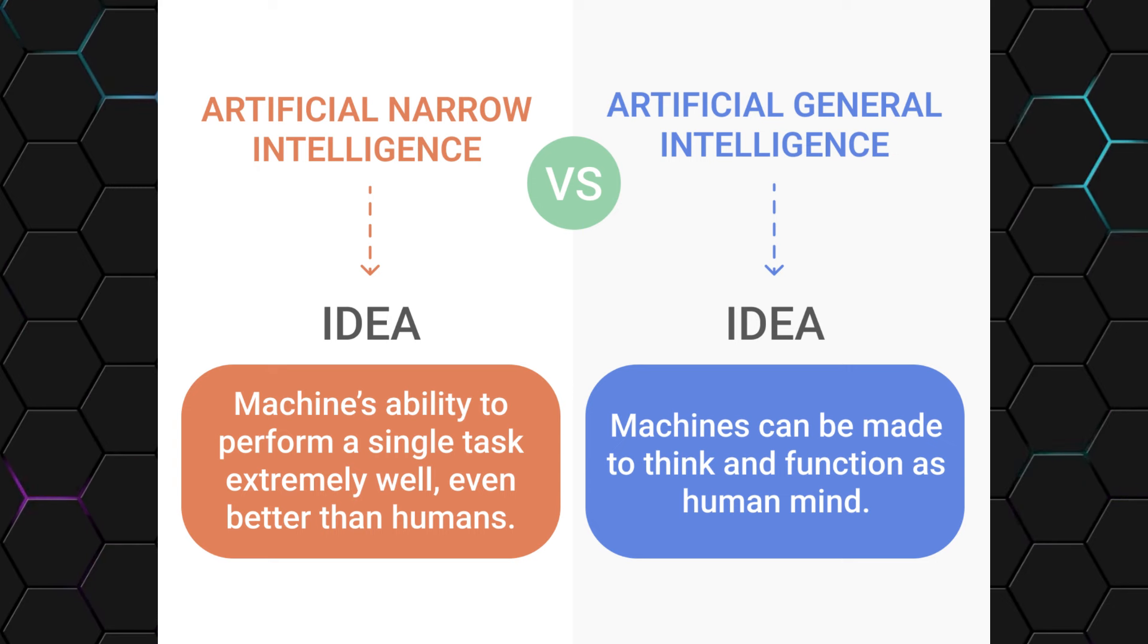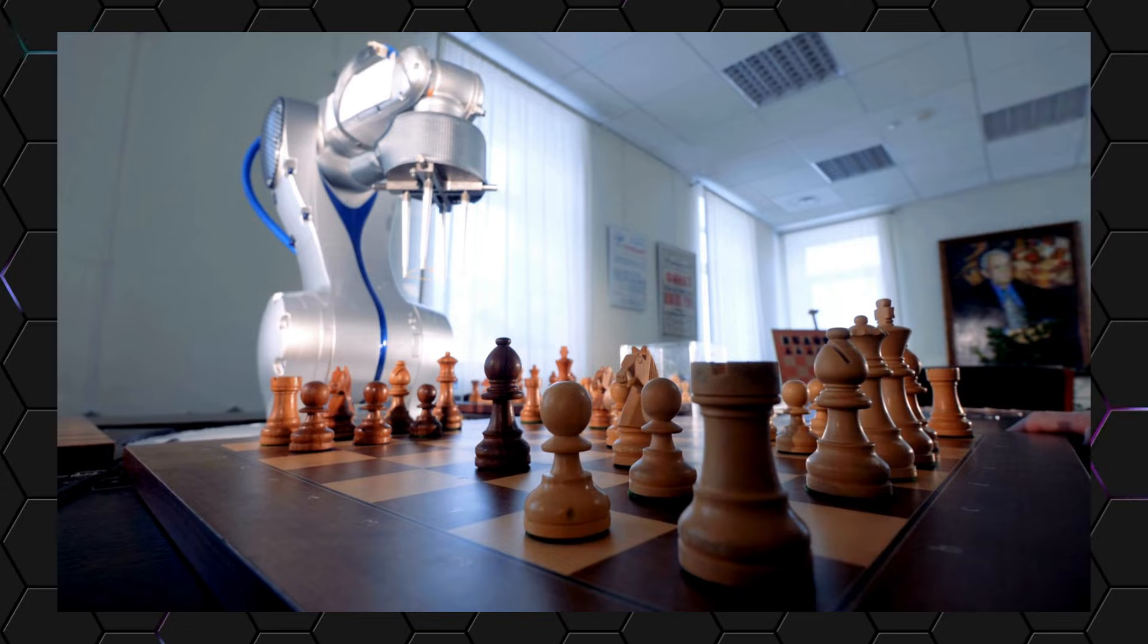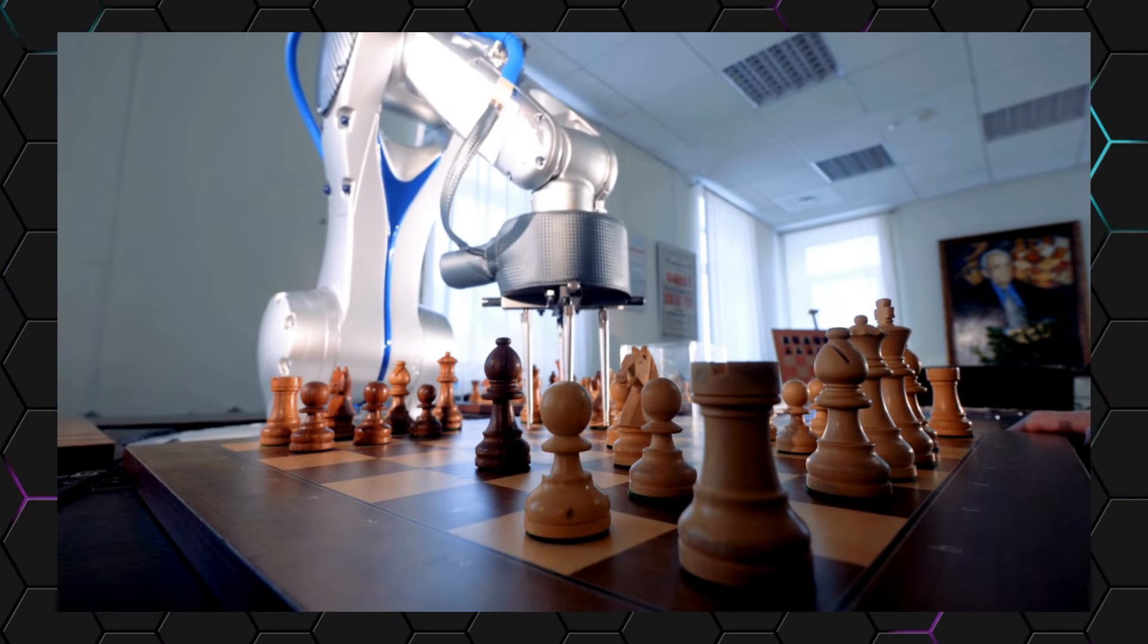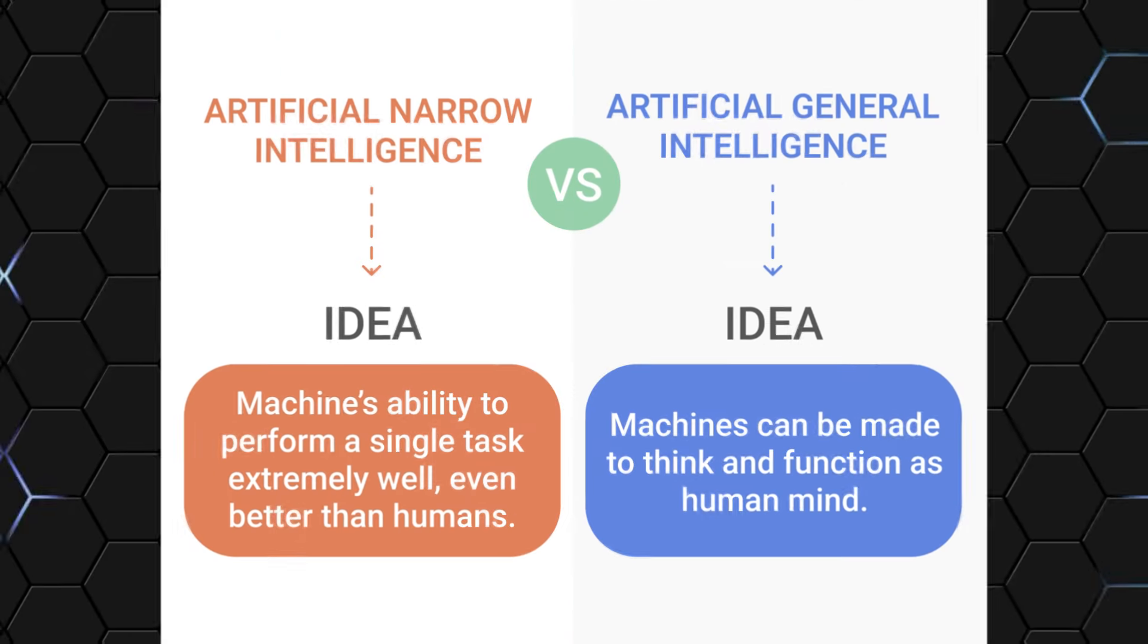However, narrow AI lacks the ability to generalize its knowledge and skills across different domains, which is a hallmark of human intelligence. Essentially, you can think of it as an AI chess bot that can outmaneuver any human opponent, but struggles to navigate a simple conversation or make a cup of coffee. In contrast,